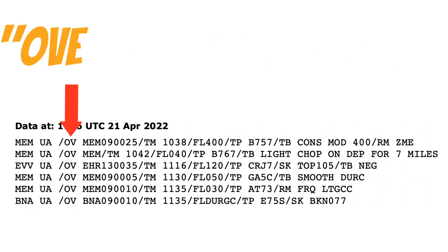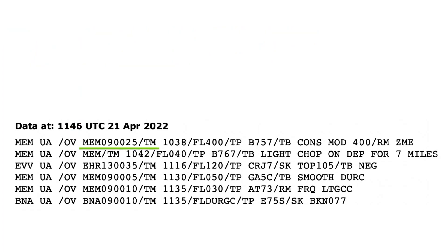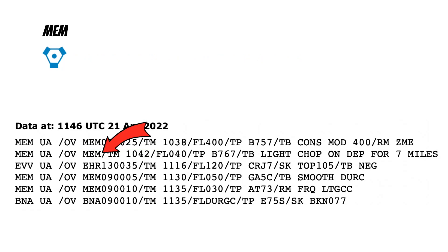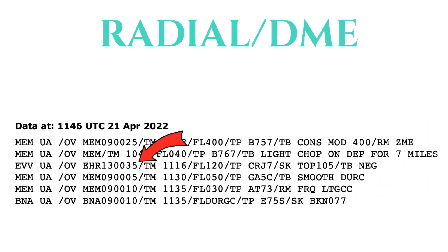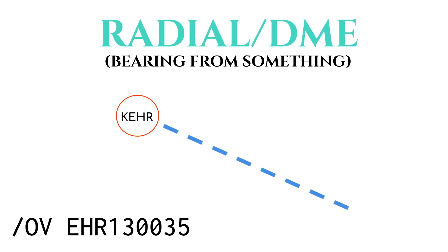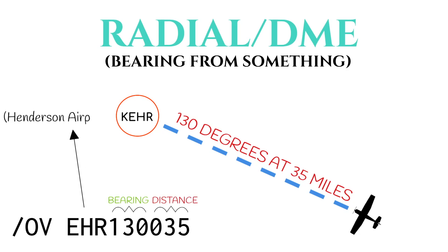The letters OV stand for 'over' — the spot the pilot was flying over when giving the report. These locations are usually given as a radial and DME from a VOR station. For example, one PIREP occurred on a 090-degree bearing from the Memphis VORTAC at 25 miles. Another occurred directly above the Memphis VORTAC. A third example shows an aircraft at 130 degrees and 35 miles from Henderson Airport — EHR — so we know exactly where that pilot was when he made the report.